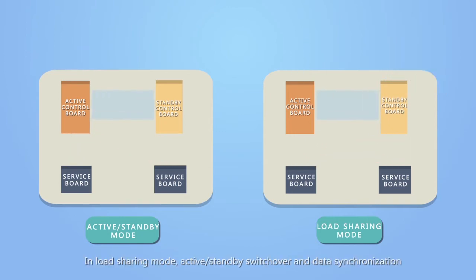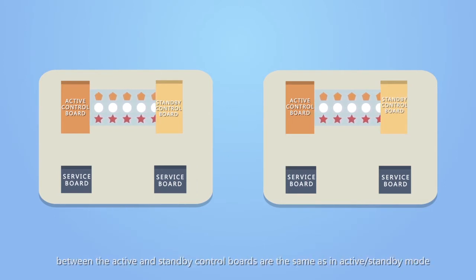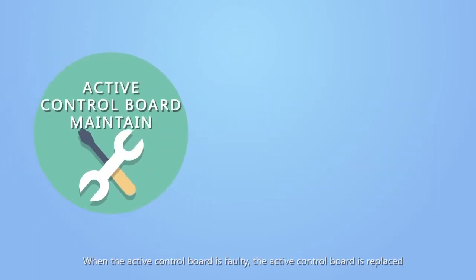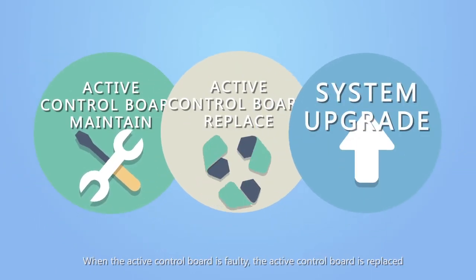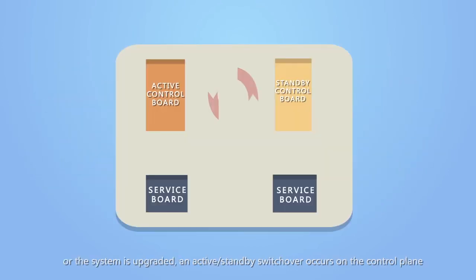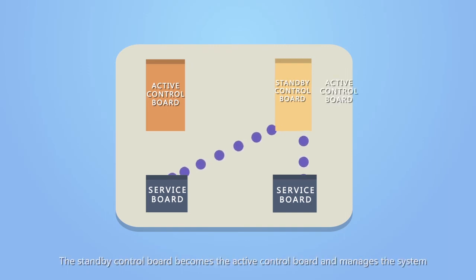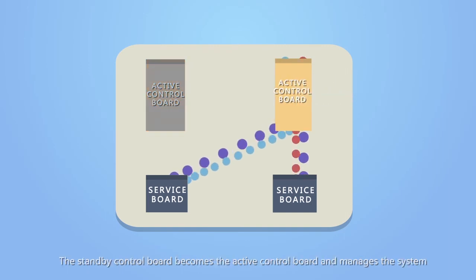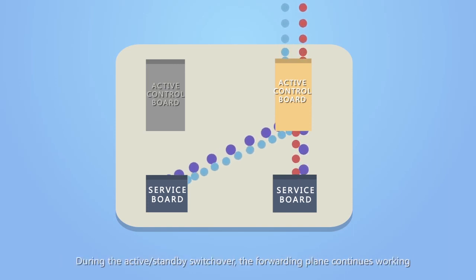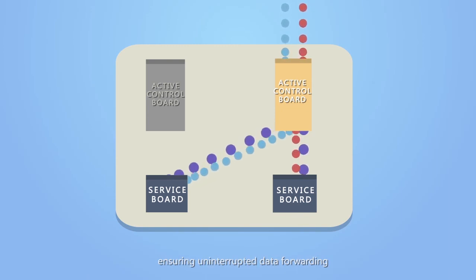In load sharing mode, active standby switchover and data synchronization between the active and standby control boards are the same as in active standby mode. When the active control board is faulty, replaced, or the system is upgraded, an active standby switchover occurs on the control plane. The standby control board becomes the active control board and manages the system. During the active standby switchover, the forwarding plane continues working, ensuring uninterrupted data forwarding.